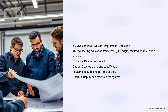Design means developing technical plans and specifications. Implement means building and testing the design. Operate means deploying and maintaining the system in real-world conditions. For example, an automotive company designing a new electric car will follow the CDIO process from concept to production.